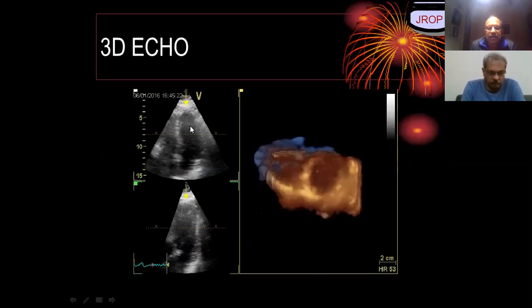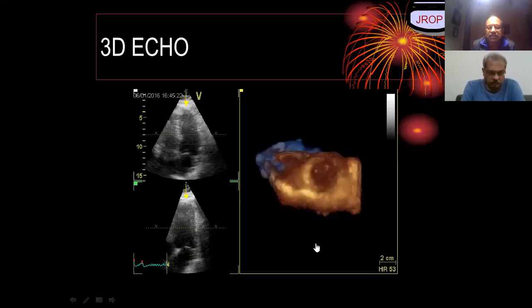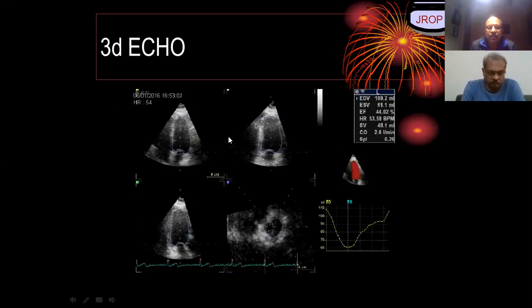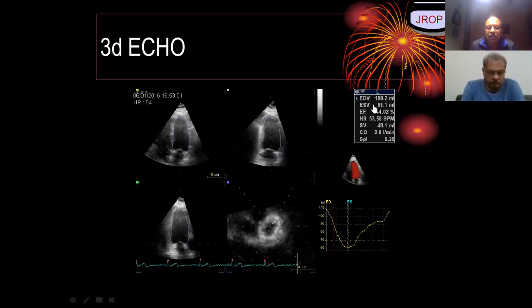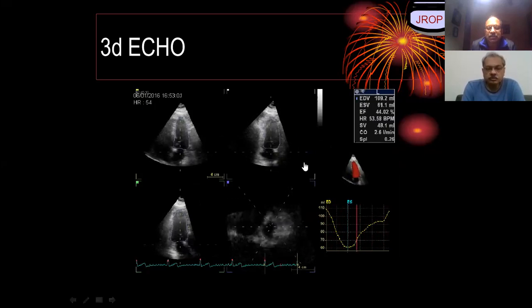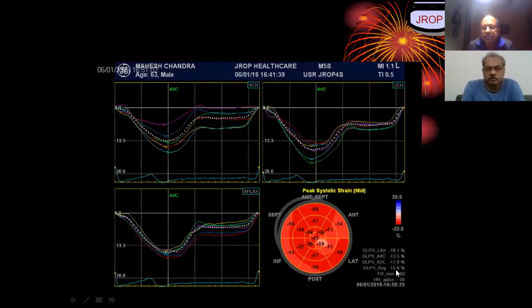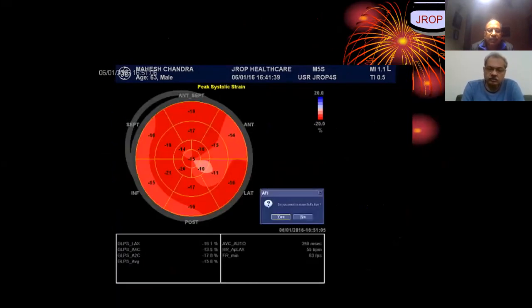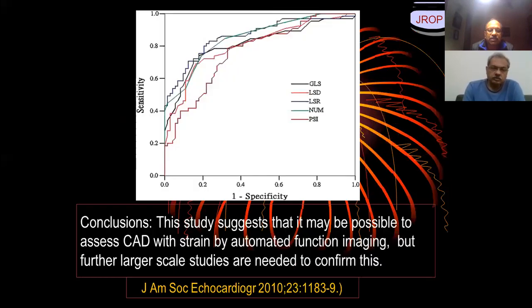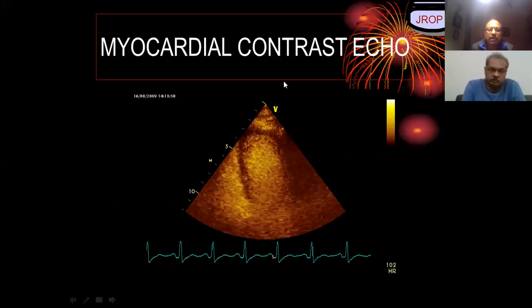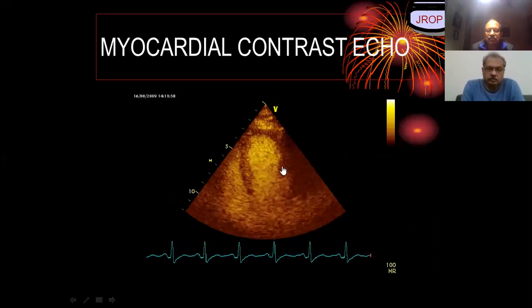We proceeded to do a 3D echo, which did not show any significant findings. Then we did LV ejection fraction, which was a little lower at about 44% as seen by automatic 3D ejection fraction. Then 2D strain was done — the GLS was approximately 15.6%, which is a little low. Importantly, there was a differential reduction of strain in the apical lateral wall. We also did a myocardial contrast echo for perfusion and opacification, and could not find any significant wall motion abnormality.